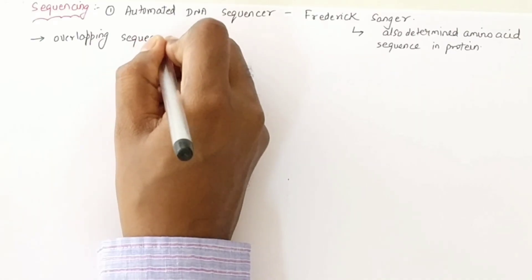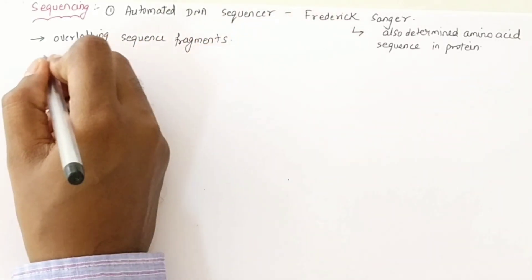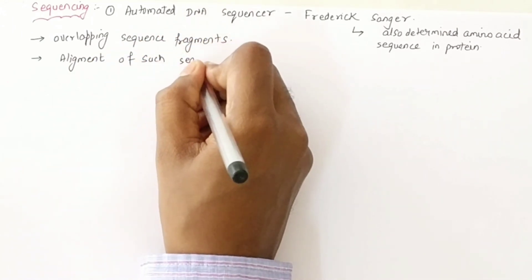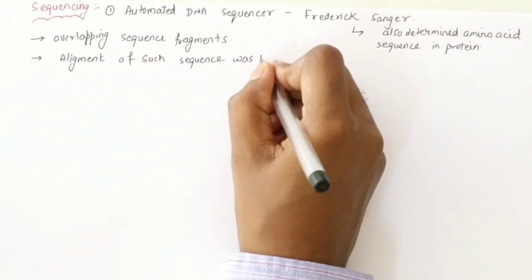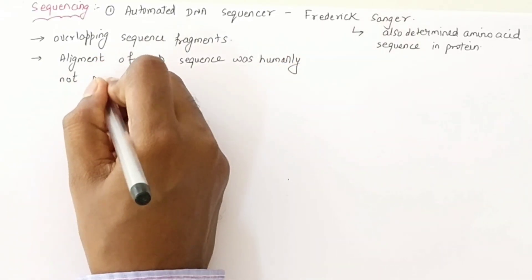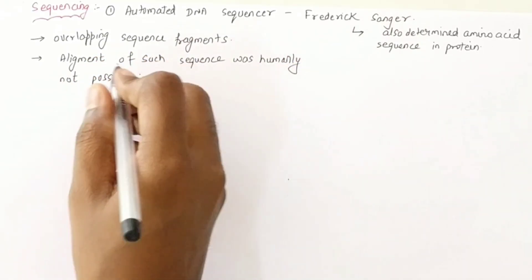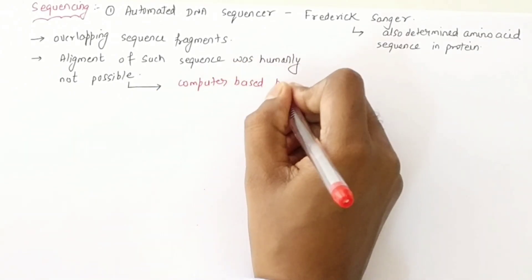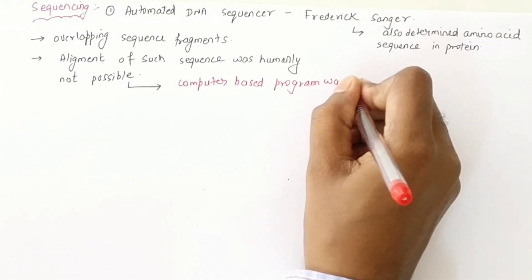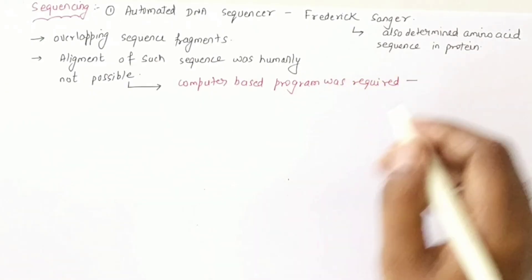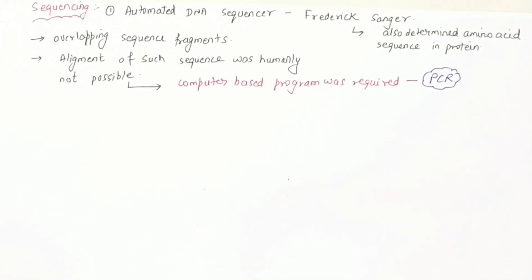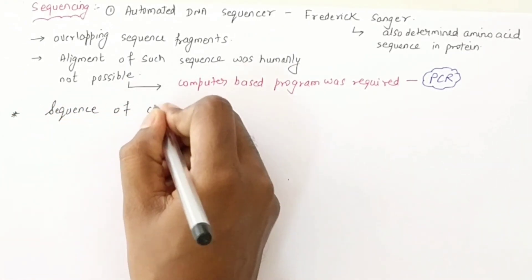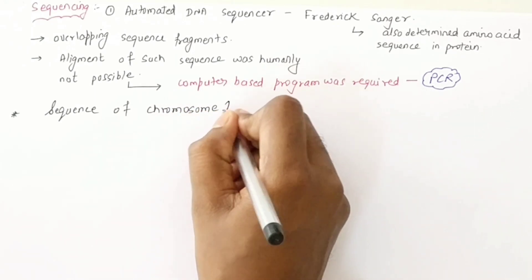The DNA sequence had a lot of overlap. Aligning the overlapping sequence fragments was not possible manually because it was so complex. So a computer-based method was used for sequencing. The computer-based program used was developed by Kerry Mullis — the father of PCR, the Polymerase Chain Reaction. PCR's invention helped the Human Genome Project be completed quickly.